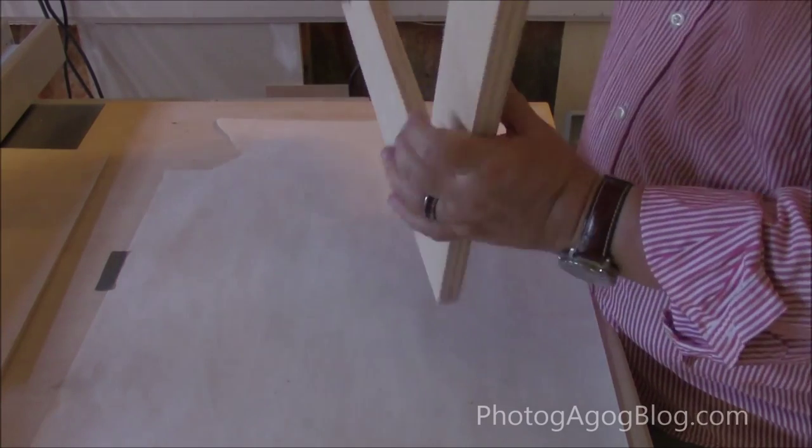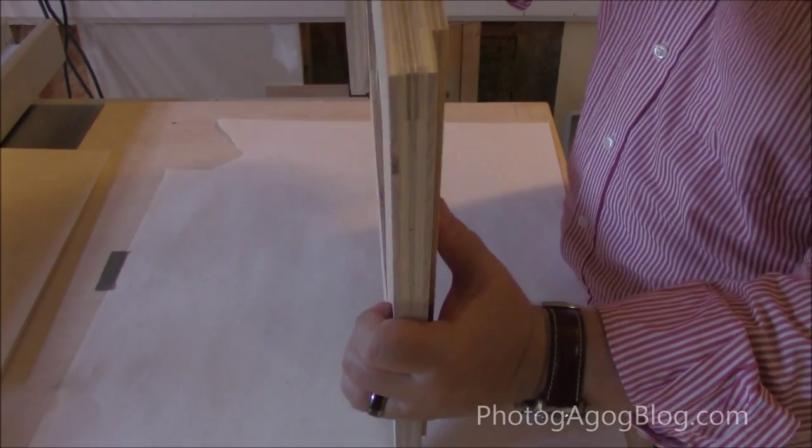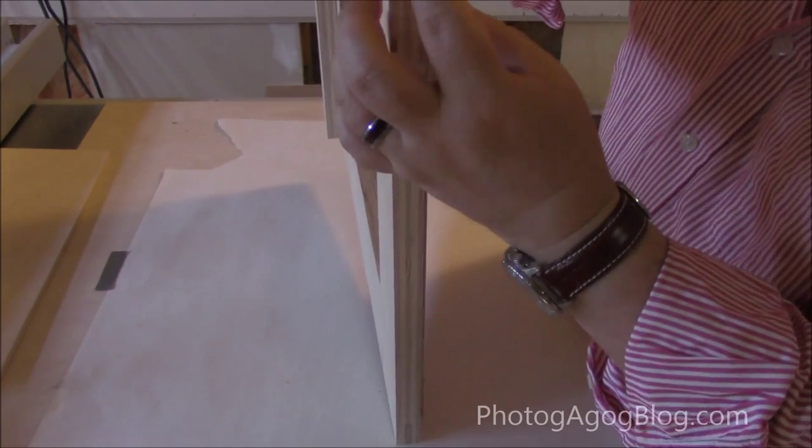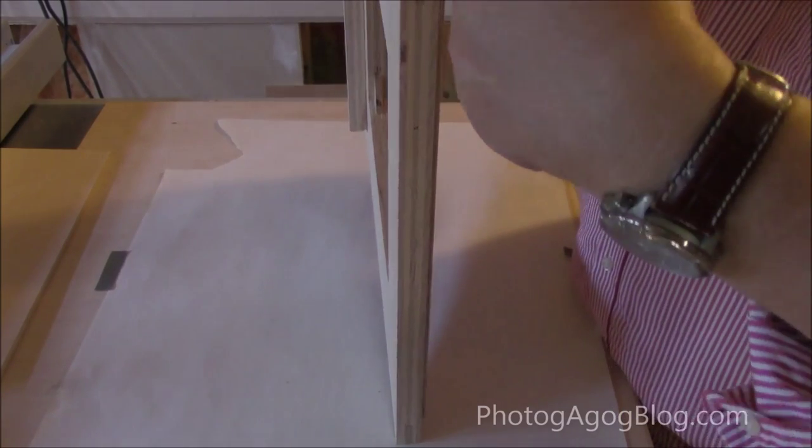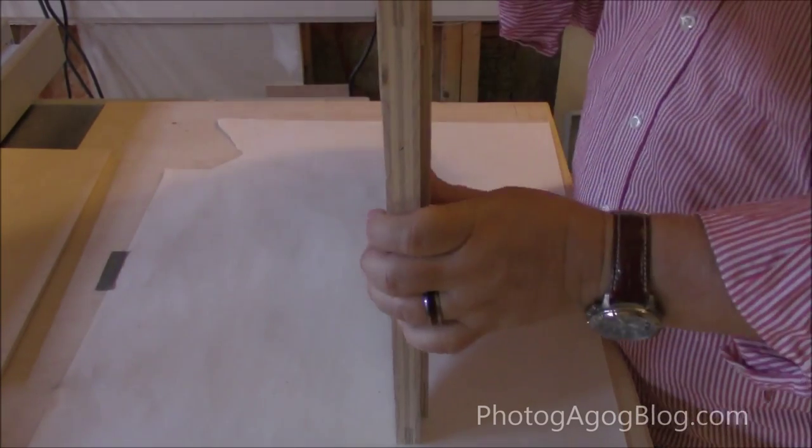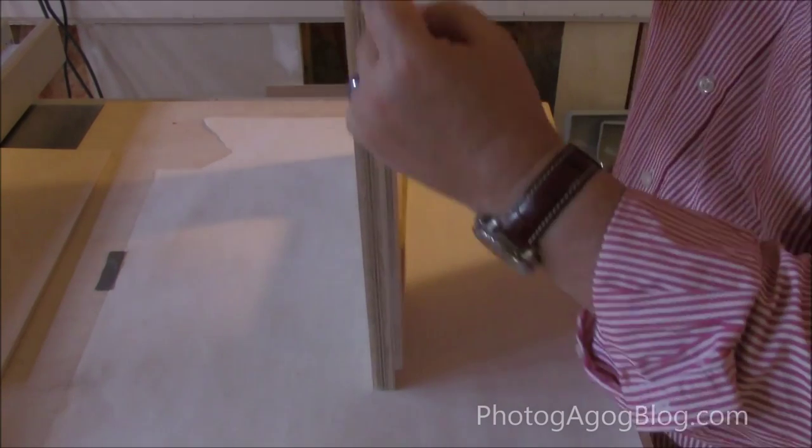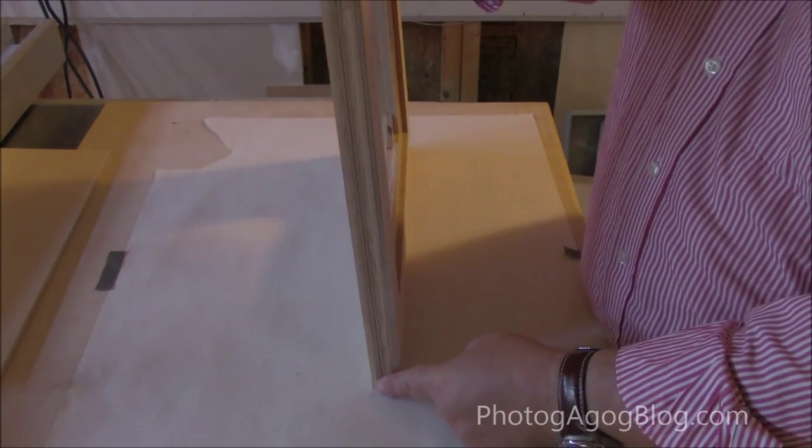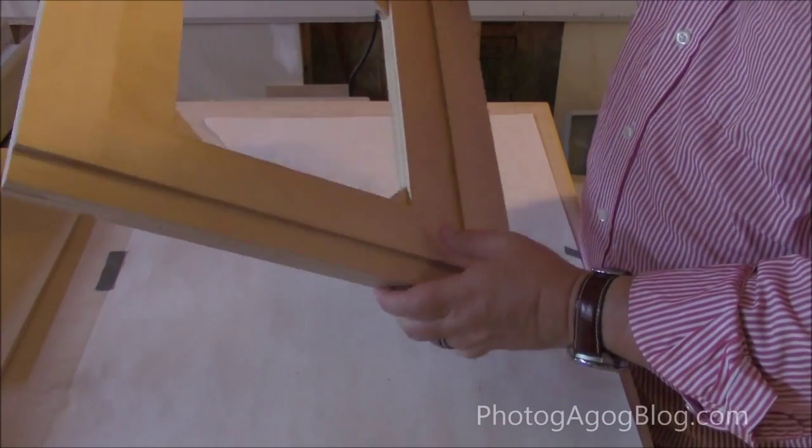The other thing that I've done, as you can see here, is I've put a rabbet in here and then I've got a strip of wood going down here, an additional strip of wood going through here to give some stability and some strength.